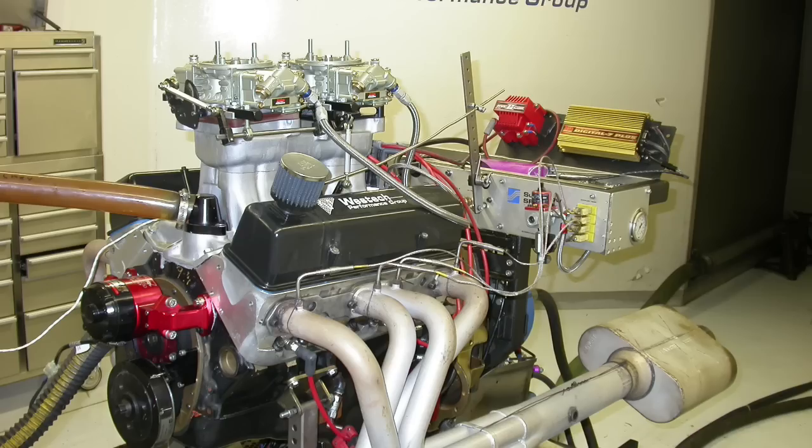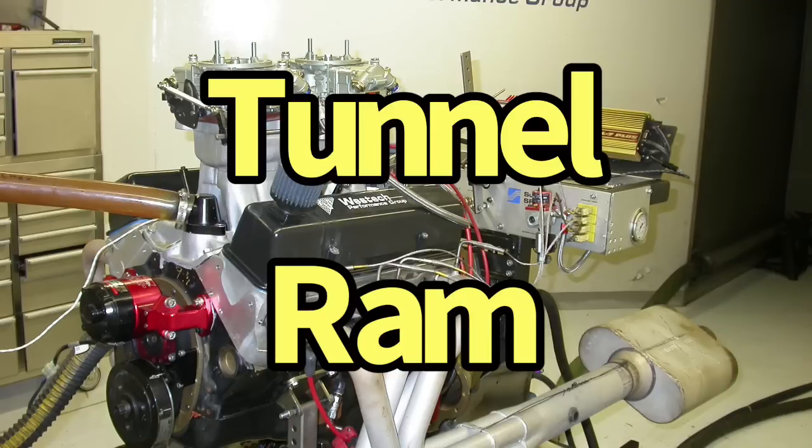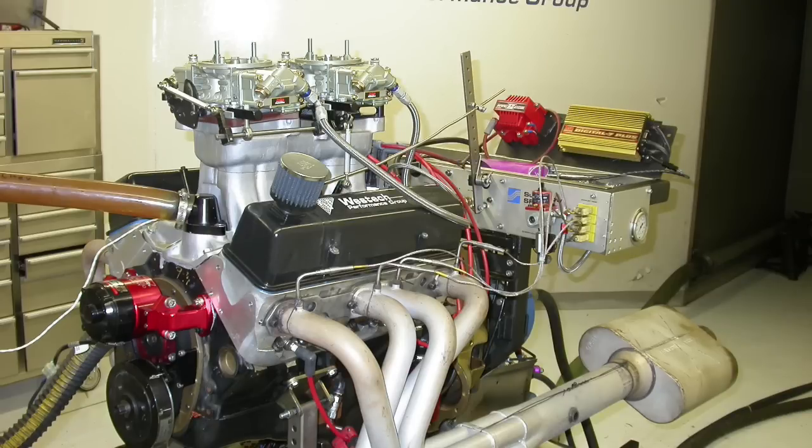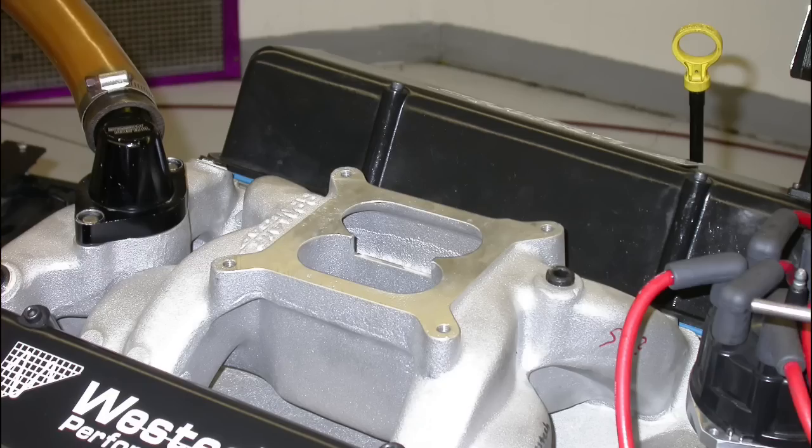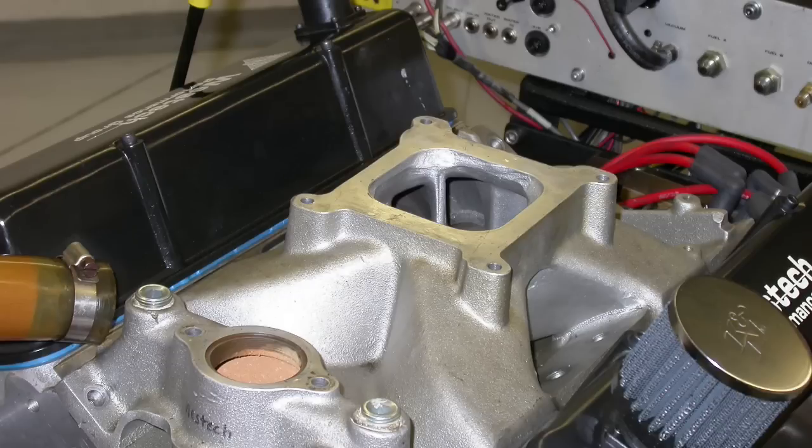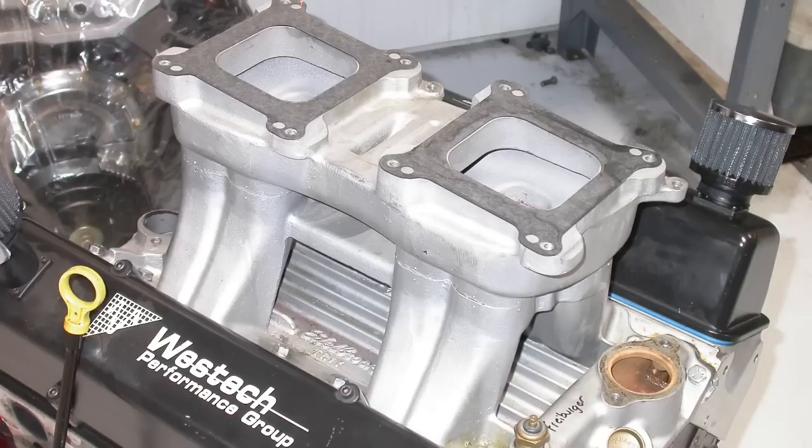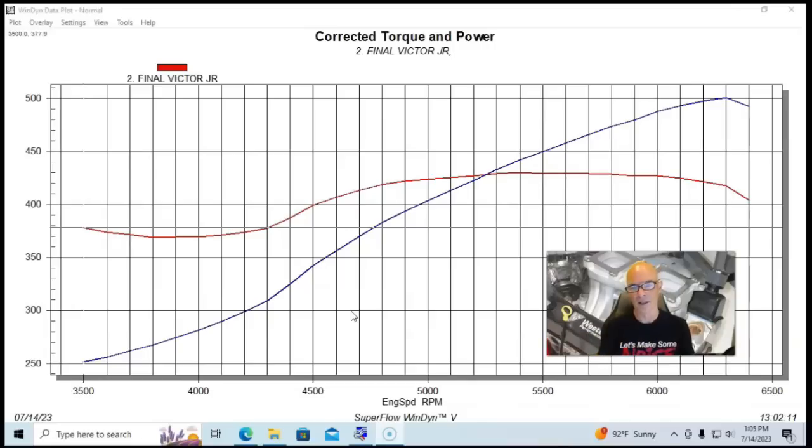Okay guys, we've taken a look at the comparison between the dual plane RPM Air Gap and the single plane Victor Jr. Now let's jump right in and get to what everybody came for: the Tunnel Ram. This particular Tunnel Ram was an old-school Edelbrock TR-1Y. In fact, I think this one belonged to David Freiberg way back in the day. This thing was run back in the 2000s, right after Y2K.